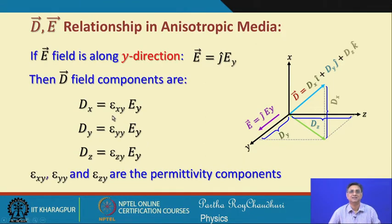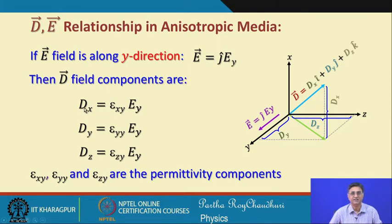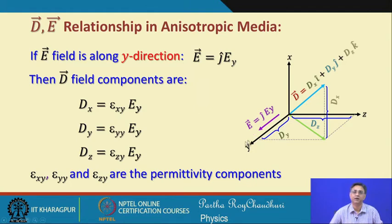When we apply an electric field along the y-axis, the displacement vector will be in a direction different from the electric field. In the same way, dx = ε_xy·Ey, dy = ε_yy·Ey, and dz = ε_zy·Ey. Here ε_xy, ε_yy, and ε_zy are the respective permittivity components when the electric field is applied along the y-axis.